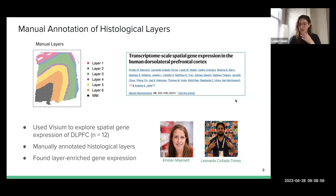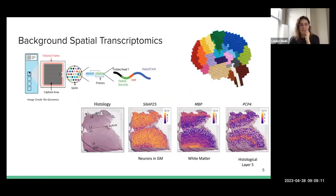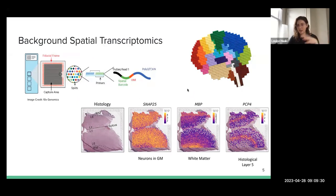Basically the idea is that there's a slide with these charged spots with barcodes. You put the piece of tissue physically on it, then rinse it so that these barcodes are added to the pieces of RNA that are in that spot on the tissue. Then we sequence that and match those barcodes back to where they were on the slide.